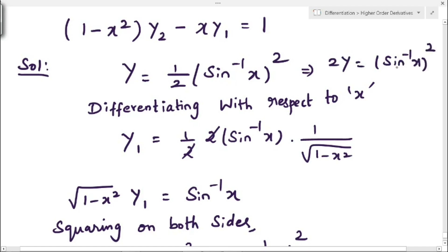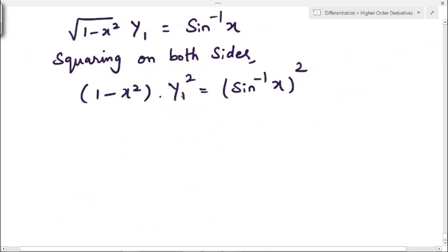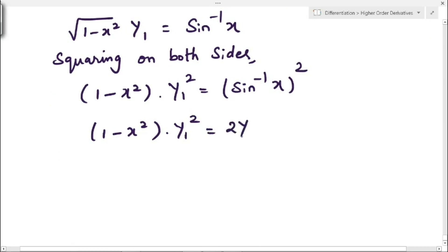In the place of (sin⁻¹x)², we write 2y, so the equation becomes (1 - x²)·y₁² = 2y. Now we have to differentiate this equation again with respect to x.